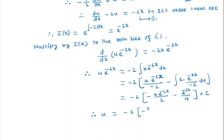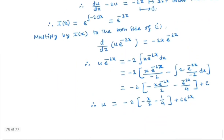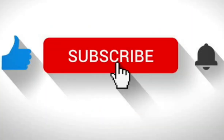Multiplying through by e^(2x), we get u = minus 2(x/2 minus 1/4) + C · e^(2x). Substituting back, since u = y to the power minus 2, the final solution is y^(minus 2) = minus x + 1/2 + C · e^(2x).